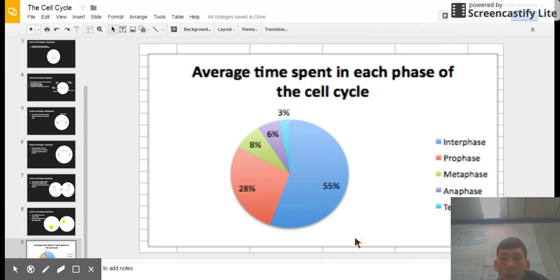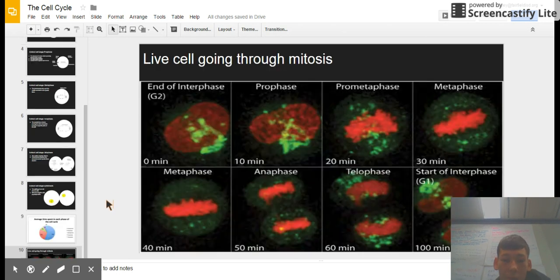This is the average time spent in each phase of the cell cycle: 3% telophase, 6% anaphase, 8% metaphase, 28% prophase, and 55% interphase. So the cell spends most of its life in interphase.